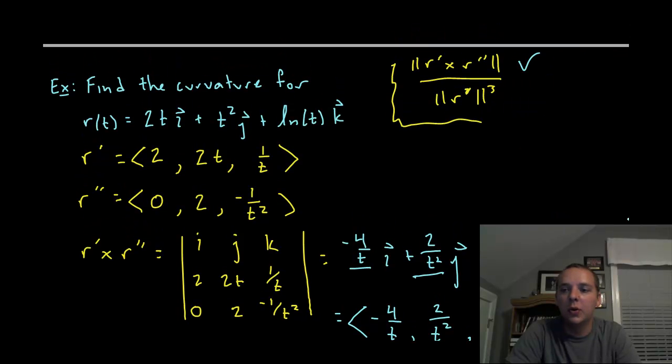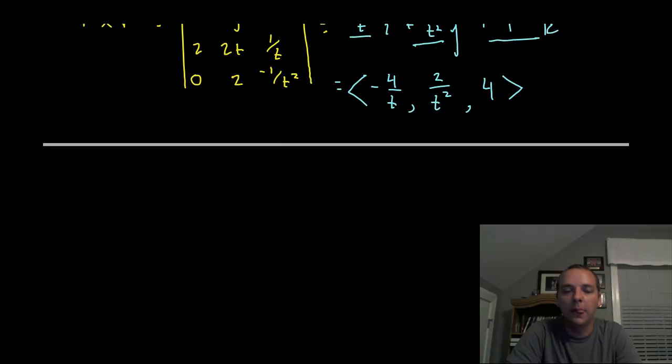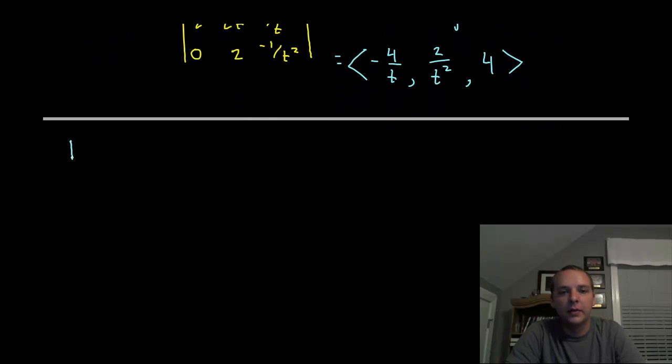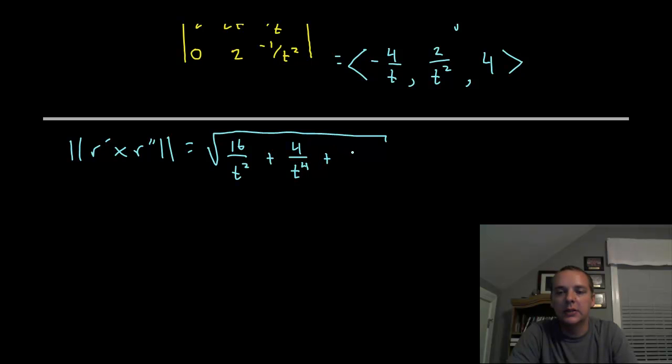Now I just need to take this norm and I'll be done with the numerator. So the norm of r prime cross r double prime would be a big square root. You square each component and then add those together. And it won't be a vector anymore, it'll be a real value function. We get 16 over t squared plus 4 over t to the 4th plus 16.